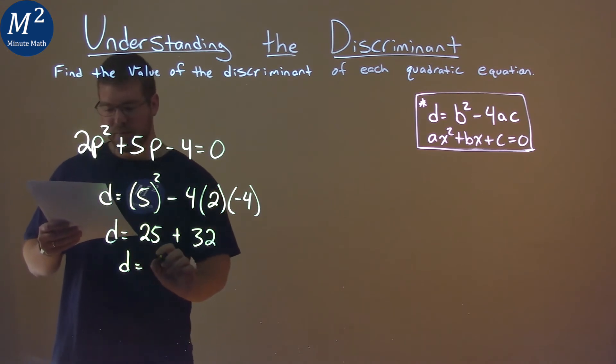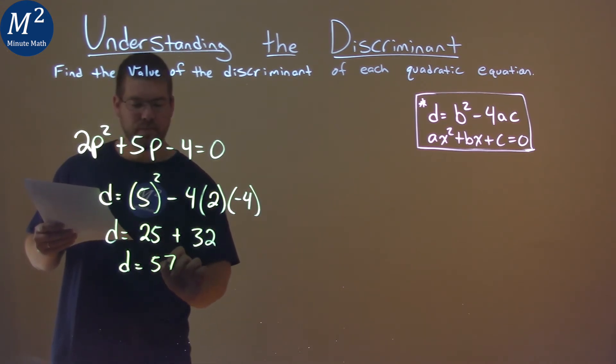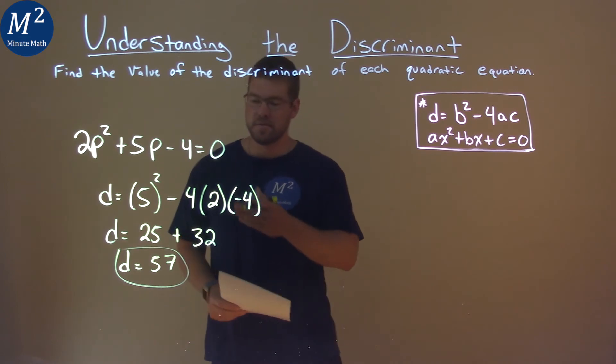So we have 25 plus 32, we add them together, and we get 57. And so our discriminant here is 57.